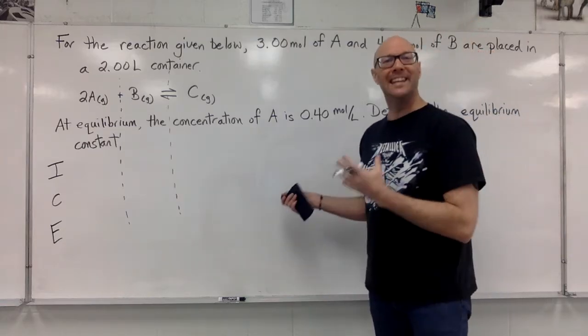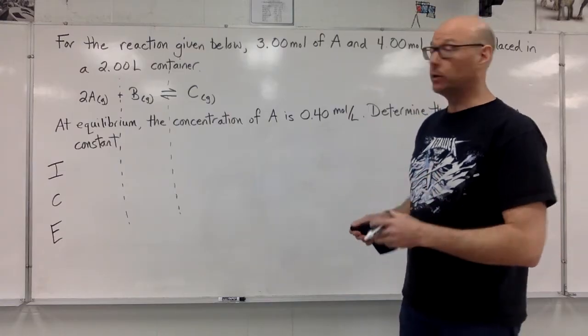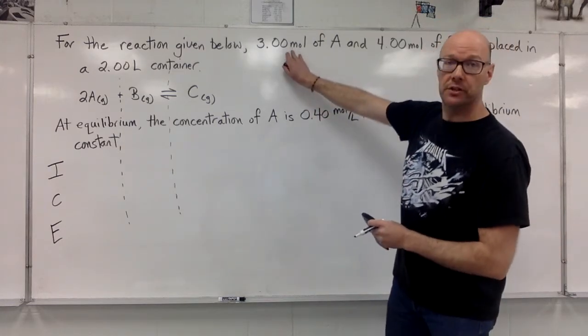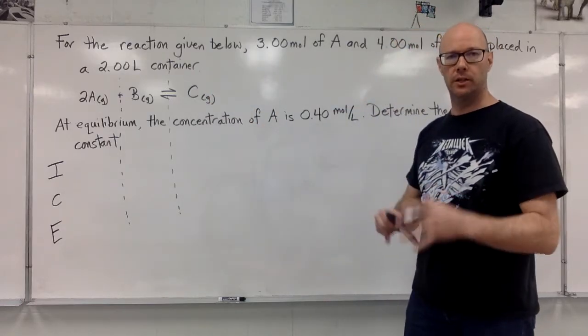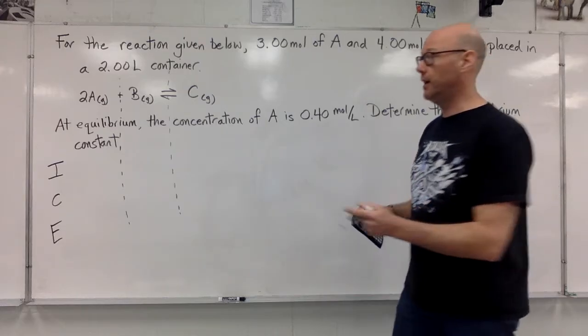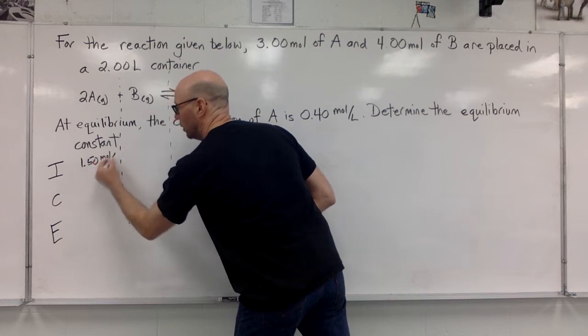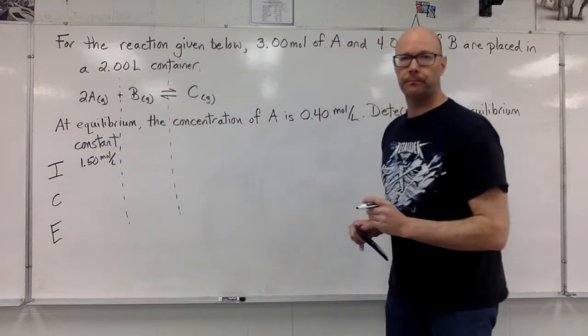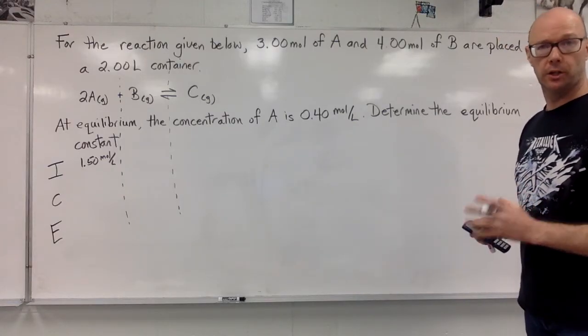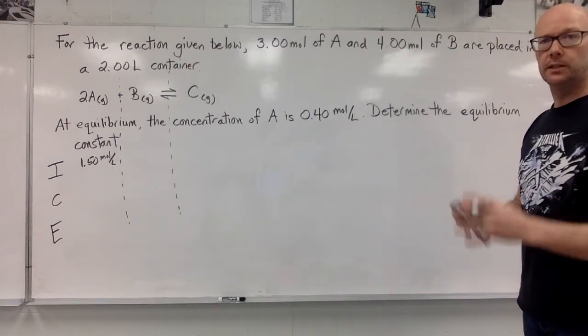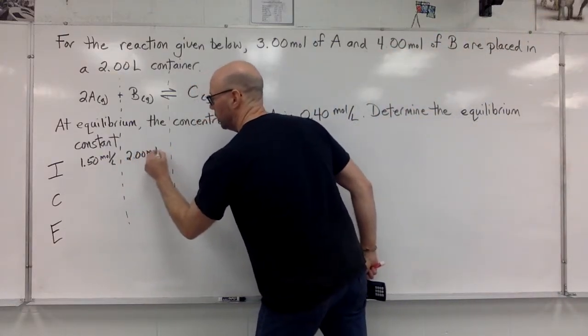The values that we're going to put in the ICE box must be molar concentrations. Here we have the extra wrinkle. We have 3 moles of A in a 2-liter container. It means the initial concentration of A was 1.50 moles per liter. For B, we had 4 moles of B in a 2-liter container, that's 2.00 moles per liter.